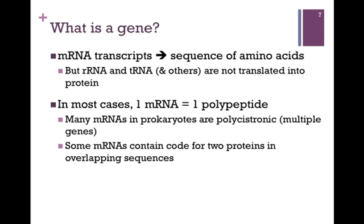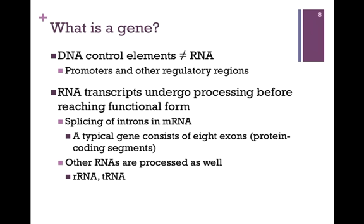In prokaryotes, many messages are polycistronic — they carry multiple cistrons, or genes. And even in eukaryotic systems, some mRNAs contain the code for two proteins in overlapping sequences; the difference is where we start, and we can produce two different proteins. We also want to acknowledge that there may be control elements in the DNA required for transcription that are not themselves transcribed into RNA. This would include promoters and other regulatory regions, as we'll see in a later lesson.